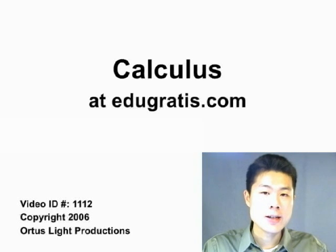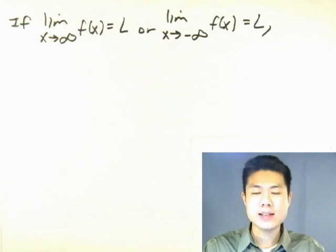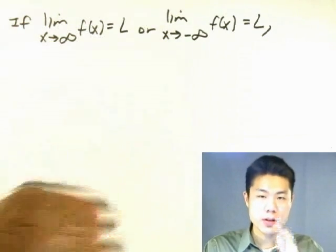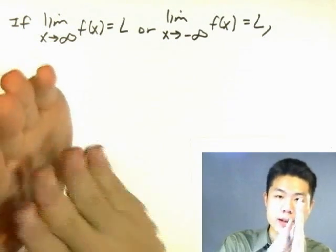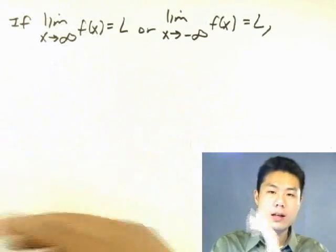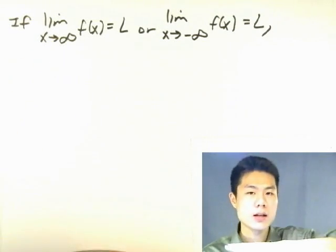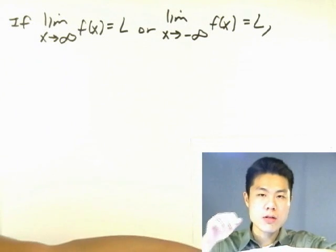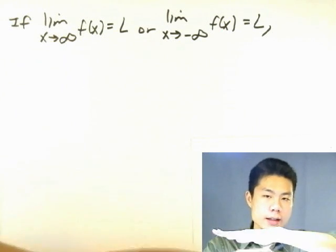Now we're going to talk about horizontal asymptotes. With horizontal asymptotes, remember with vertical asymptotes it's a vertical line that the graph sort of approaches and hugs. With the horizontal asymptote it's the same thing — it's a horizontal line that the graph hugs as it approaches at the ends.